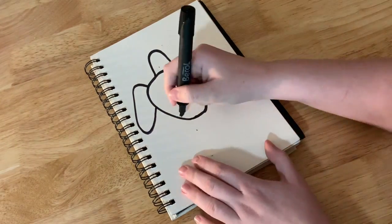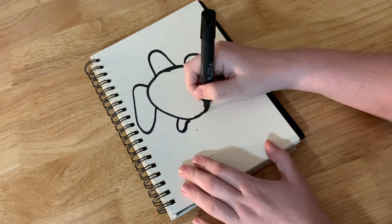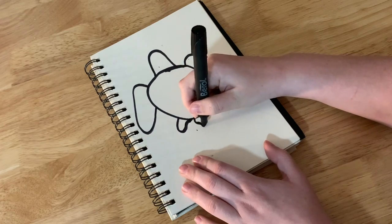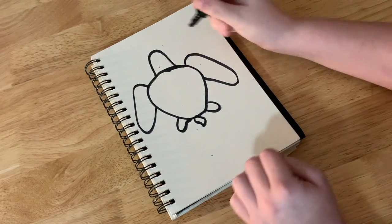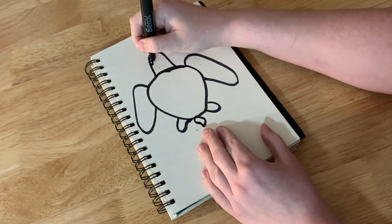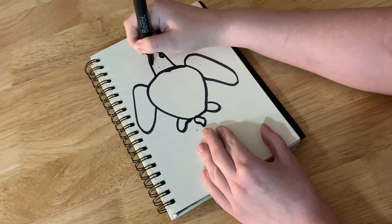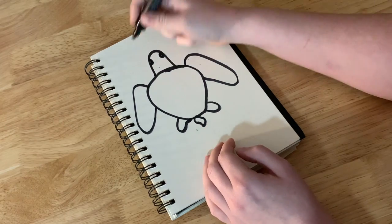Then he has two smaller little back feet like this and a little tail like that. Then I'm going to go ahead and give him some eyes, just drawing two semicircles on either side of his head.